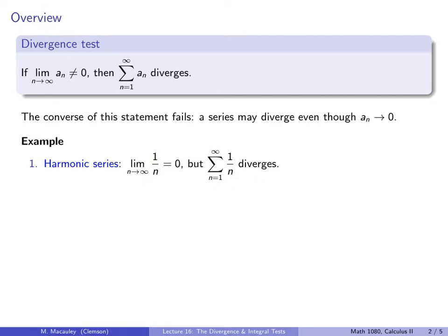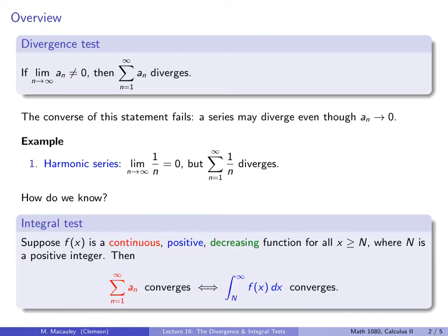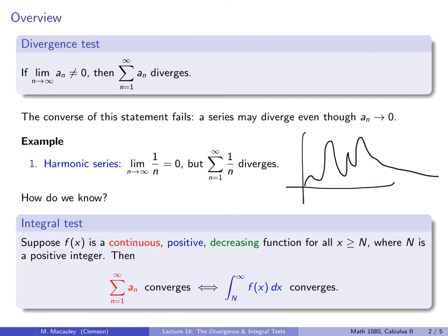We saw this last lecture but didn't have the tools to prove it — that's what we're going to do now, using the integral test. The integral test says: suppose we have a continuous, positive, decreasing function — it doesn't have to be decreasing everywhere, just eventually decreasing for all x greater than some positive integer. So for example, we have a function that may do anything initially but at some point must be decreasing. And a_n is defined as f(n).